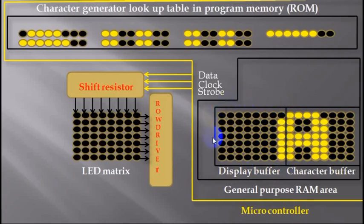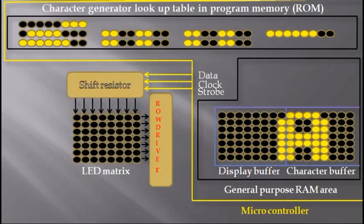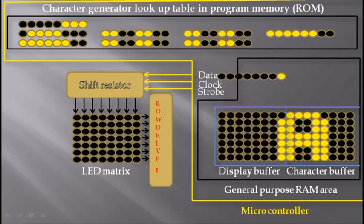Here the refreshing process comes into action. In this subroutine, data bytes from the display buffer are copied one by one and shifted to the LED matrix through the shift register IC. The bit pattern is shown on the right row of the matrix by activating the right row drive signal from the microcontroller. The bit shifting process and the refreshing are repeated until the character buffer becomes empty.